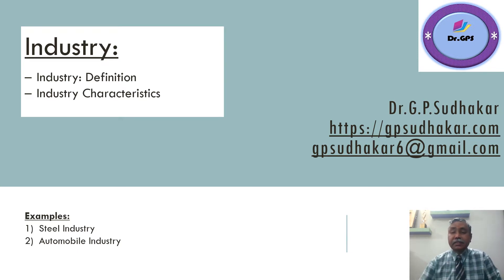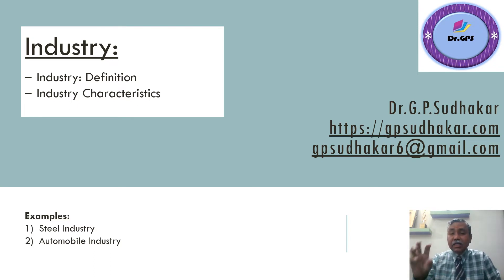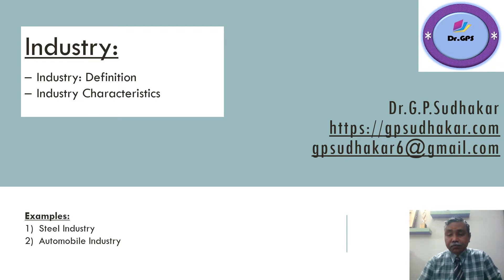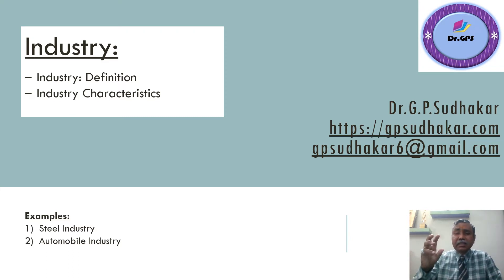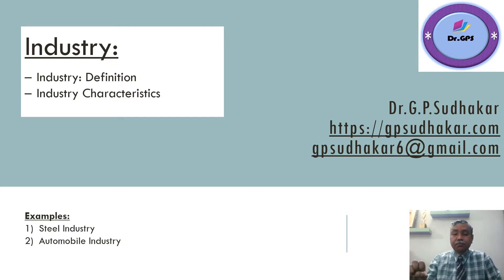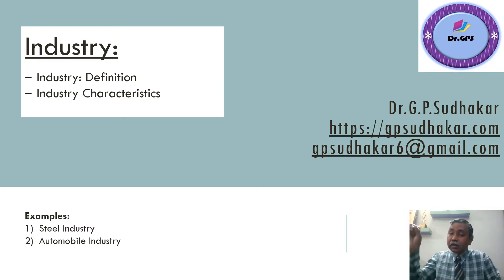So what do we mean by industry? In this video we are going to learn about what industry means and what are the overall characteristics of an industry. Basically, industry is nothing but a collection of all the producers of similar products in a chosen area — for example, pharmaceutical industry, chemical industry, paper industry.